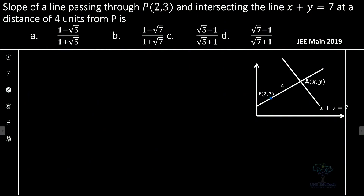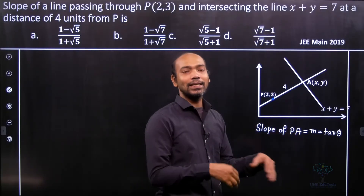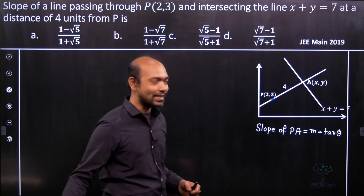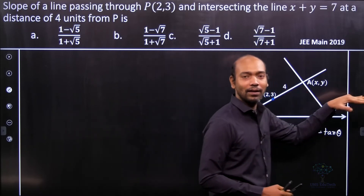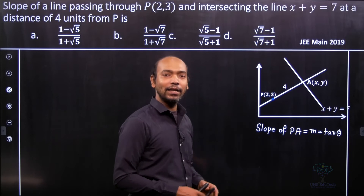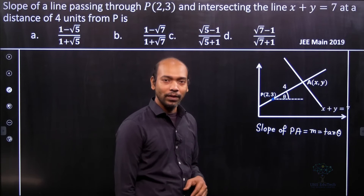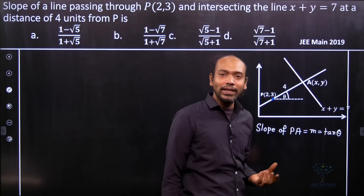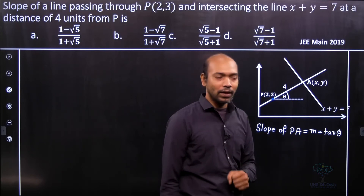Let us consider that the slope of line PA is M, and obviously M = tan θ, where θ is the angle which the line makes with the positive direction of the x-axis. Now, we know that we have to draw a parallel line through point P, and whichever angle it makes, that will be tan θ. So this angle you can see is θ, and we need to find that tan θ value — that's the basic concept.